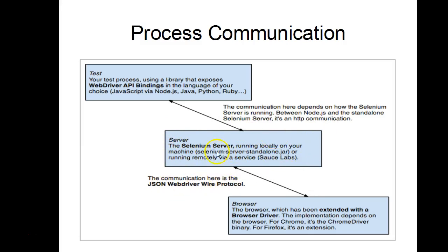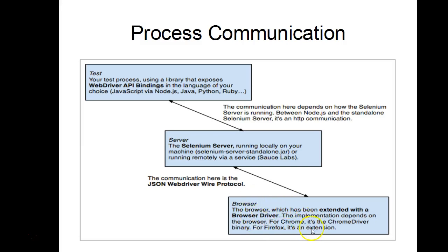The server layer is the middle layer in Protractor's architecture. The Selenium server interacts with the browser using the JSON WebDriver Wire Protocol. The browser layer consists of different browser drivers like Chrome driver and Firefox driver. So: communication between the test layer and server layer happens via HTTP, and communication between the server layer and browser happens using the JSON WebDriver Wire Protocol.